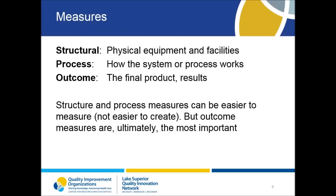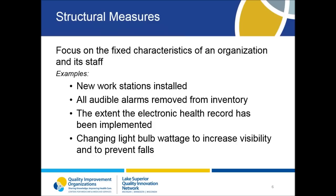There are three types of measures we use to help us define what to measure to show success or improvement. Structural measures, which apply to physical equipment or facilities. Process measures, which tell us if the process is occurring as we intended. And outcome measures, which address the final product or results. You will often find that structural measures and process measures may be the easiest to measure, but outcome measures are ultimately the most important. Let's look at each of these measures in more detail.